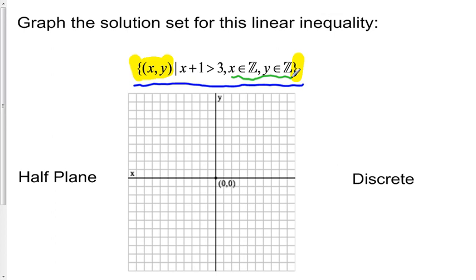What we have here is a restriction on the domain and on the range, and I sort of alluded to that in the first two videos that that can happen and that changes things. So we have here that x is an element of Z and y is an element of Z. Z here is representing the set of integers.